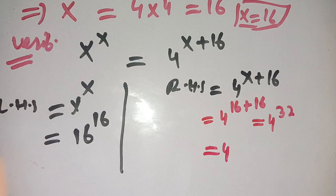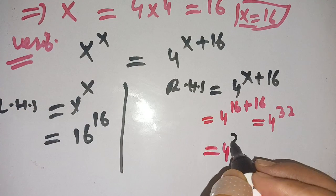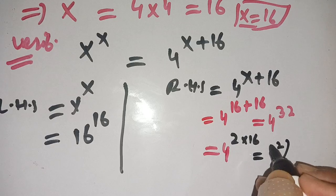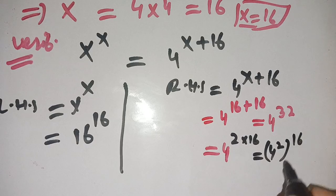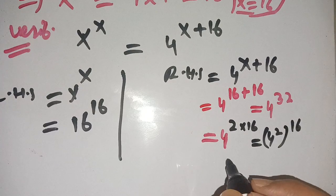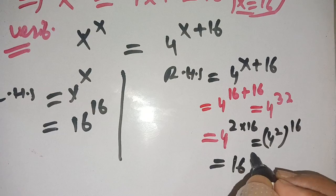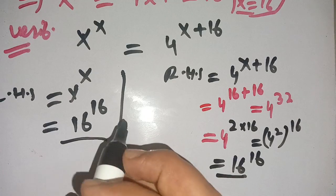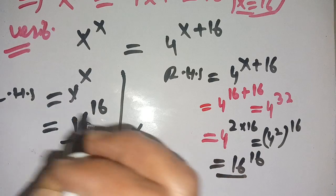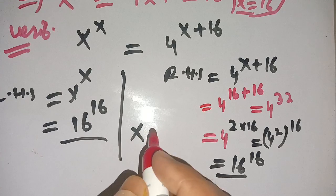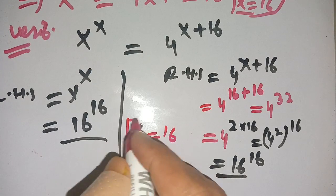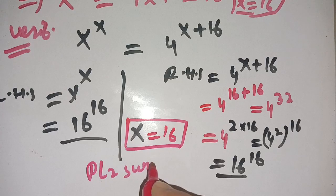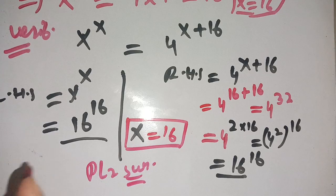We can write 4^32 = 4^(2 times 16) = (4^2)^16 = 16^16. Thus left-hand side equals right-hand side, which confirms that x = 16 satisfies our equation. If you are new here, make sure to subscribe to the channel for more math videos. See you in the next video, bye!